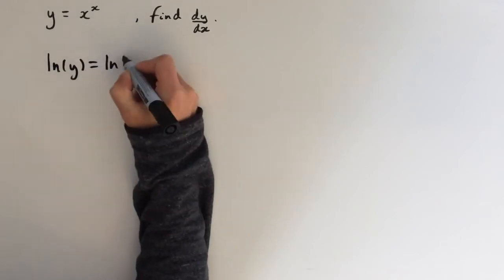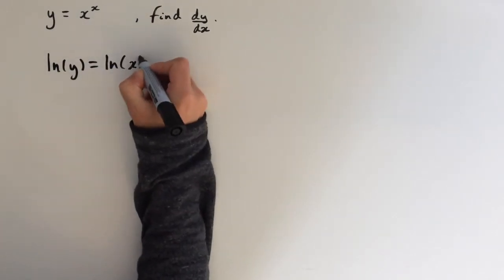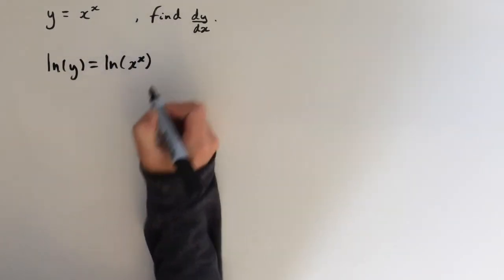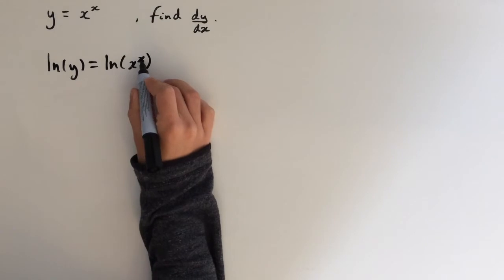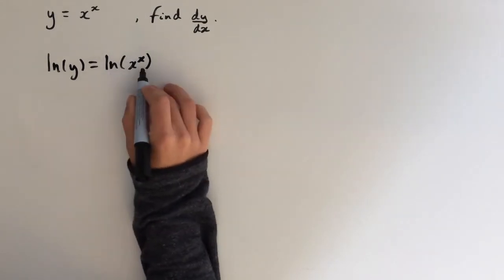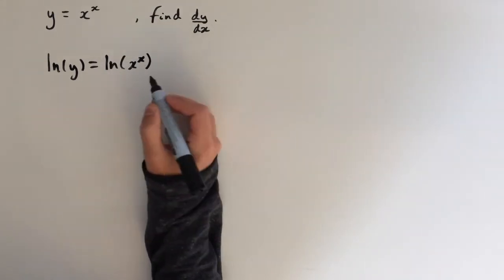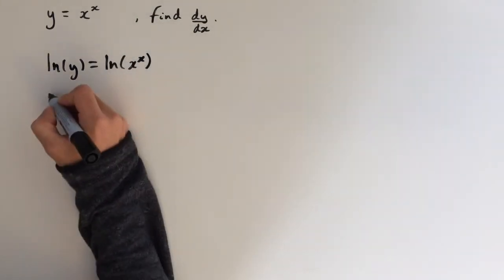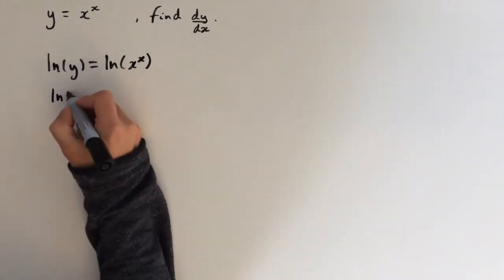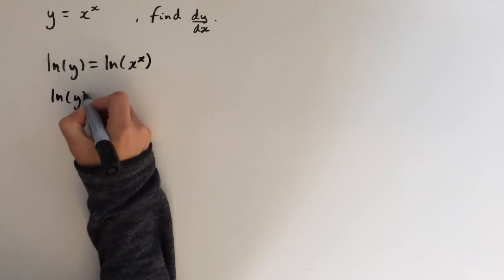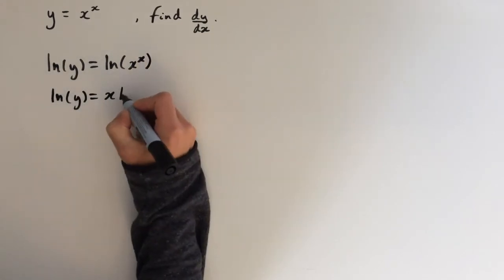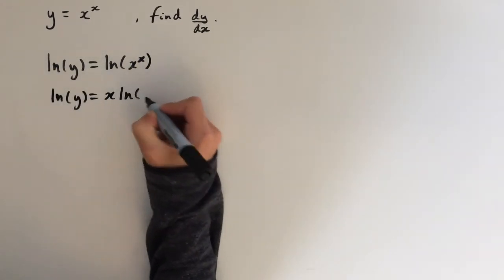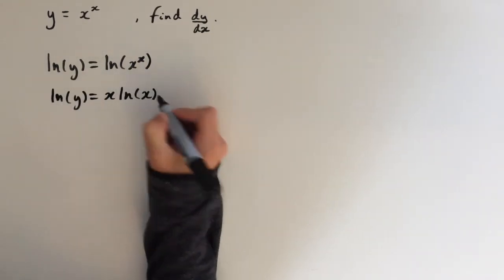So ln of y equals ln of x to the power of x. And now we can bring down the x here to the front because this is the law of logarithms. So we get ln of y equals x times ln of x.